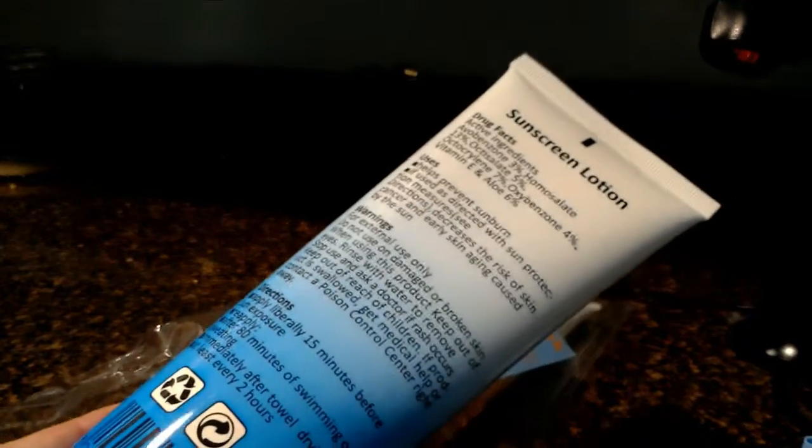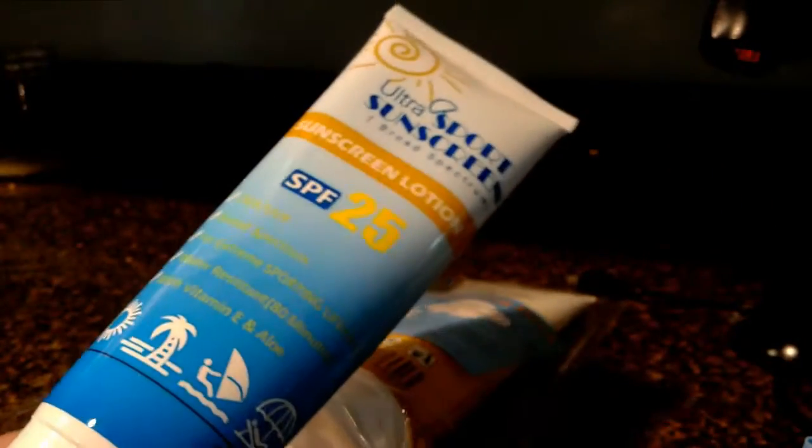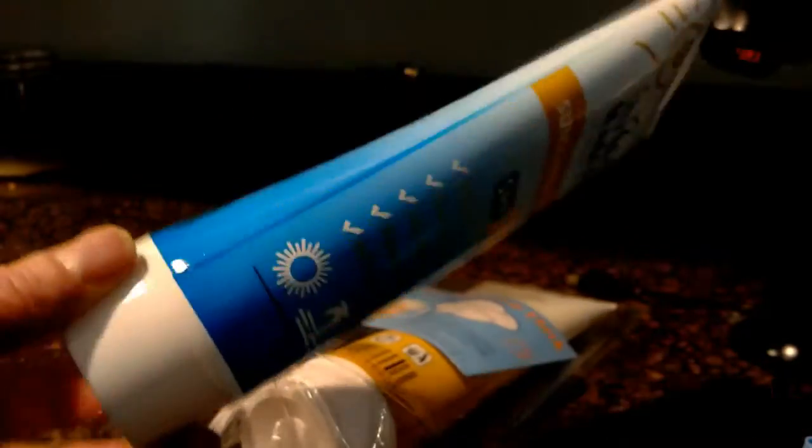Two flasks are 9.7 ounces. One flask will hold one 275 milliliter wine bottle. They're reusable and durable, made of food grade plastic.